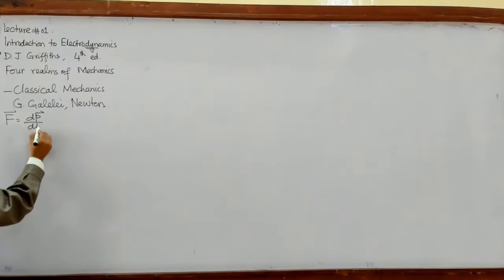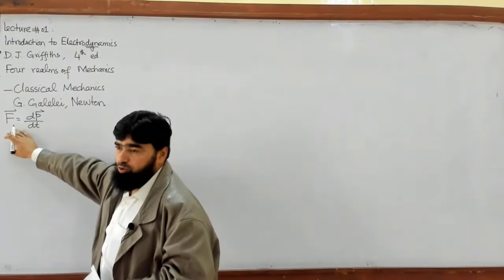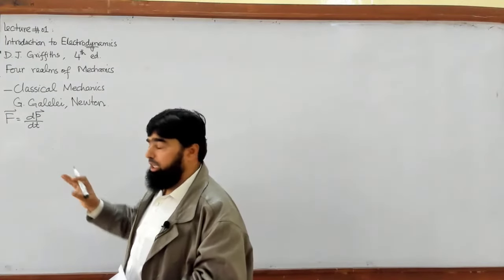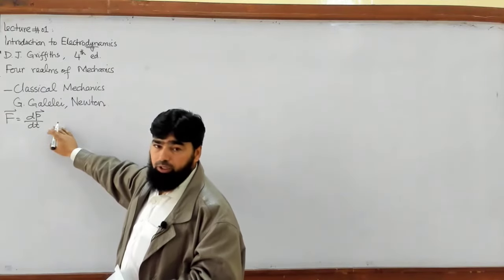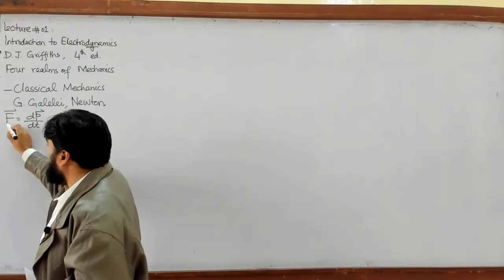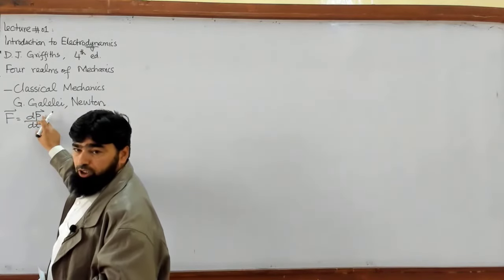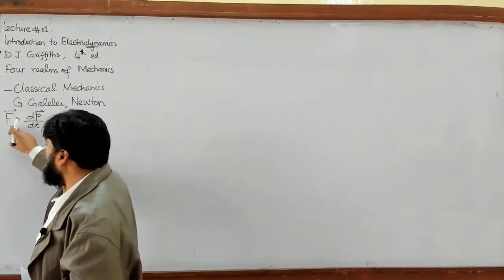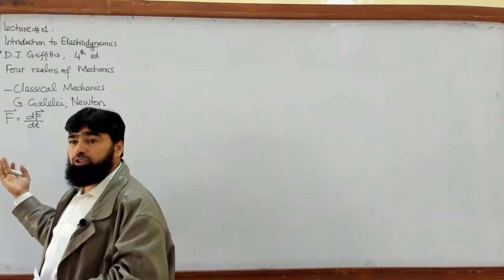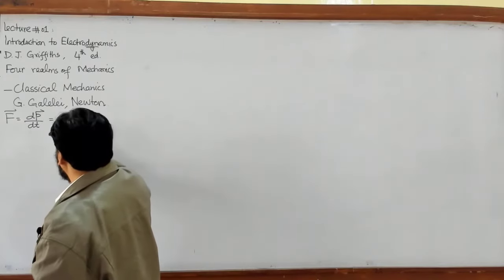The second law of motion is written as F equals dp over dt — the rate of change of linear momentum is called force. We often write Newton's second law as F equals ma, but that is not right. F equals ma is just a corollary of F equals dp/dt.